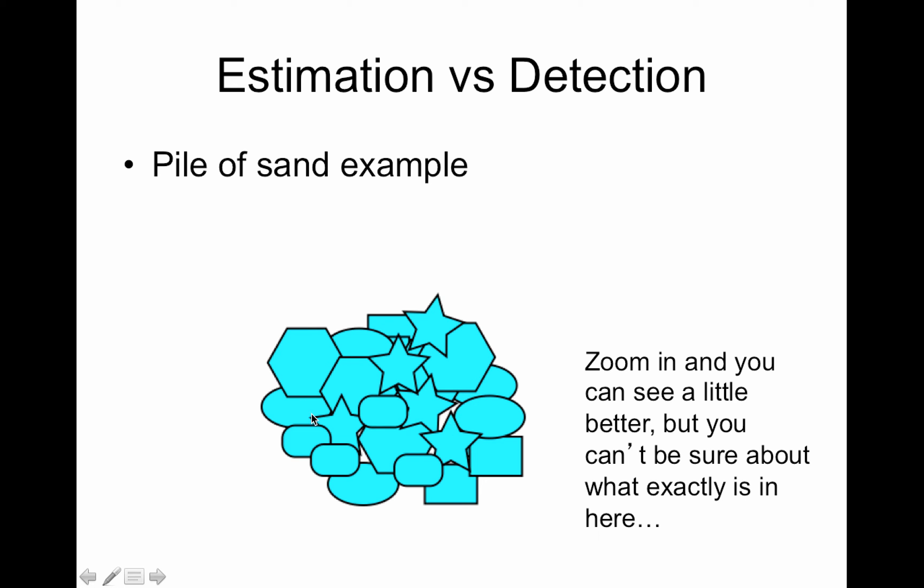You kind of have to guess that the rest of this one kind of looks like the rest of a hexagon or something like that. So you can see it better but you can't be exactly sure what's here. So we're able to detect the sand but we can't say what the actual grains of sand look like.